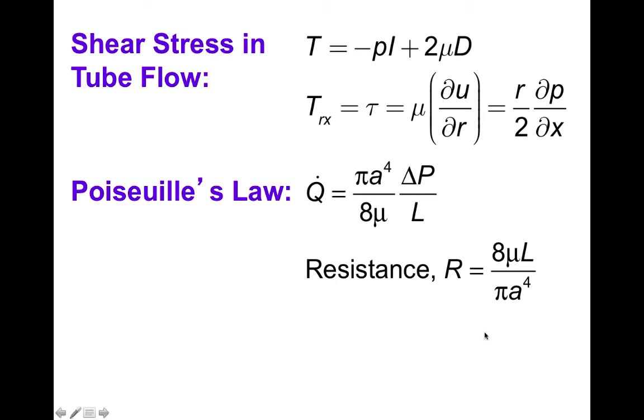We can also use this solution to compute the stresses, specifically the shear stress solution. And so using the equation for a Newtonian viscous fluid, for this flow where u is only a function of r, we get the trx or tau, the shear stress is mu del u del r, which is r over 2 del p del x. So the shear stress is proportional to the driving pressure gradient and increases with the radius.